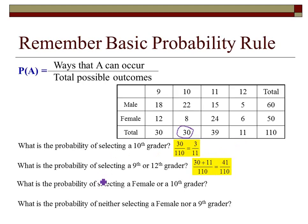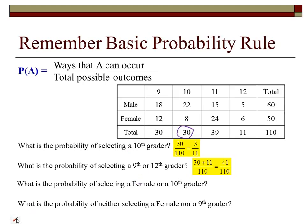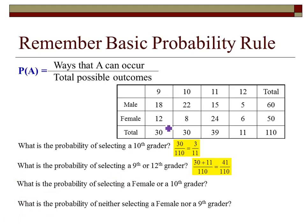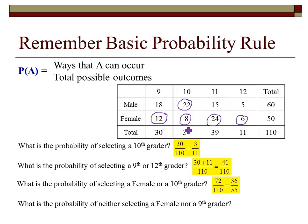Now I want to find the probability of selecting a female or a 10th grader. We have to be careful not to count the same thing twice. Counting all females gives 50. Then I add the 22 male 10th graders, who also count as successes in this situation. So I've got 72 out of 110, which reduces to 36 out of 55.